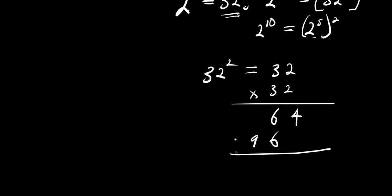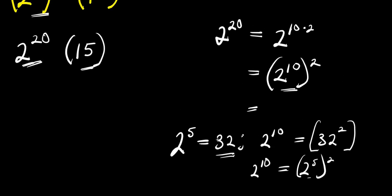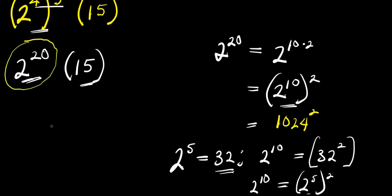You add them together. This is 4, 6 plus 6 is 12, carry over 1. That is 10. You have 1024. So, 2 to the power of 10 is 1024. So, what we are basically looking for is 1024 to the power of 2.